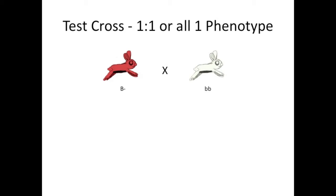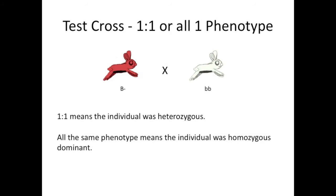Next up is the test cross, which is when you cross an individual of unknown genotype but dominant phenotype with a homozygous recessive, in order to determine that unknown genotype. There are two outcomes to the test cross. Either you get a 1 to 1 ratio of red to white, or you get all red. If you get 1 to 1, then that means the unknown was heterozygous. If you get all red, that means the individual was homozygous dominant.